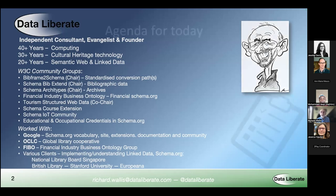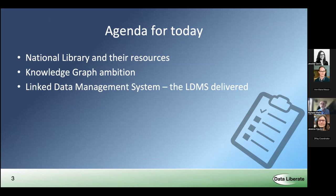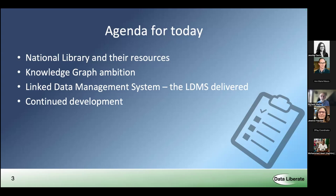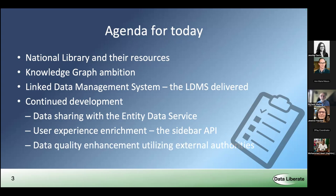A brief agenda of what we're going to be talking about today: a quick reminder about the National Library and their resources and knowledge graph ambitions; the linked data management system that was built and launched a while ago; and then the important part — the continued developments beyond the launch of that system around data sharing with their entity data service, user experience enrichment across systems in their library using something called the Sidebar API, which I'll explain a bit later on; and enhancing the data quality of the knowledge graph by using external authorities.